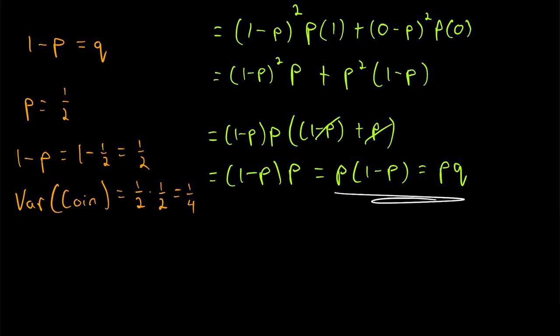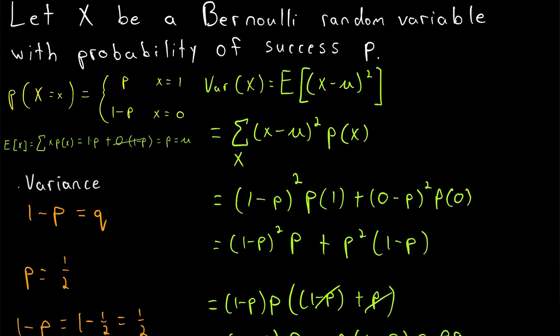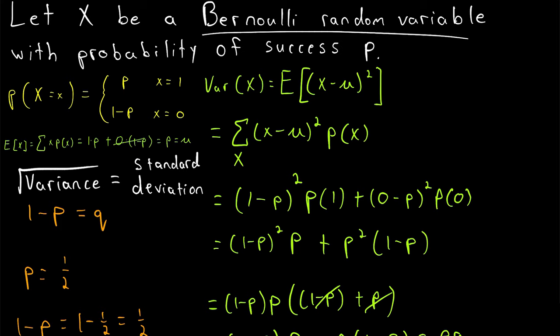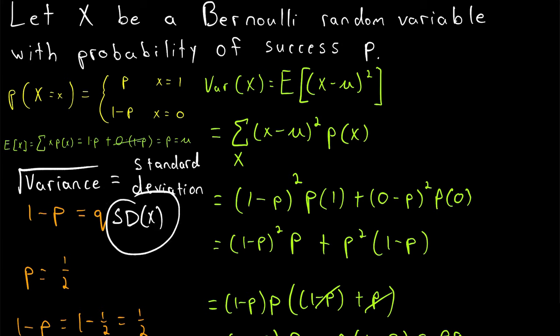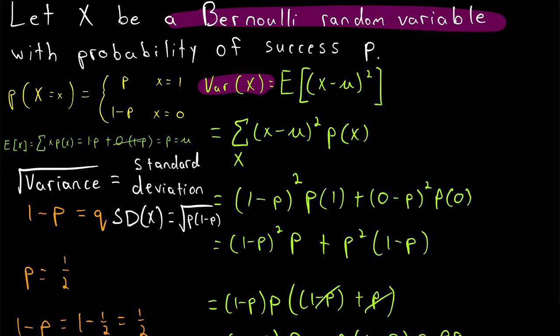That is the variance of a Bernoulli random variable and how we derive it. Remember that the square root of the variance is the standard deviation, so the standard deviation of a Bernoulli random variable with probability of success p is the square root of p times (1 minus p). I hope this video helped — let me know in the comments if you have questions, and consider supporting the channel on Patreon. Be sure to subscribe for the swankiest math lessons on the internet.